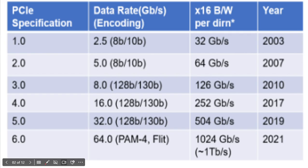Before understanding the features of Gen 6, let's understand the previous generations — their data rate, type of encoding, and modulation scheme. Starting with PCIe Gen 1: data rate is 2.5 GT/s, encoding is 8B/10B, and the modulation scheme is Non-Return-to-Zero (NRZ), which has two levels: 0 and 1. Generation 2: data rate is 5 GT/s, encoding is 8B/10B, modulation scheme is NRZ.